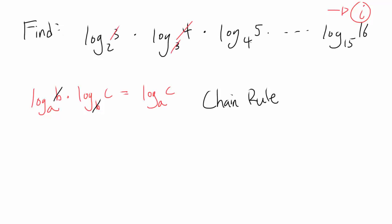This 3 and this 3 cancel out. These 4s cancel out, 5s cancel out, 6s cancel out, all the way to 15s canceling out. So all we have left is log base 2 of 16, which is equal to 4 because 2 to the 4th power is 16. So that's it.